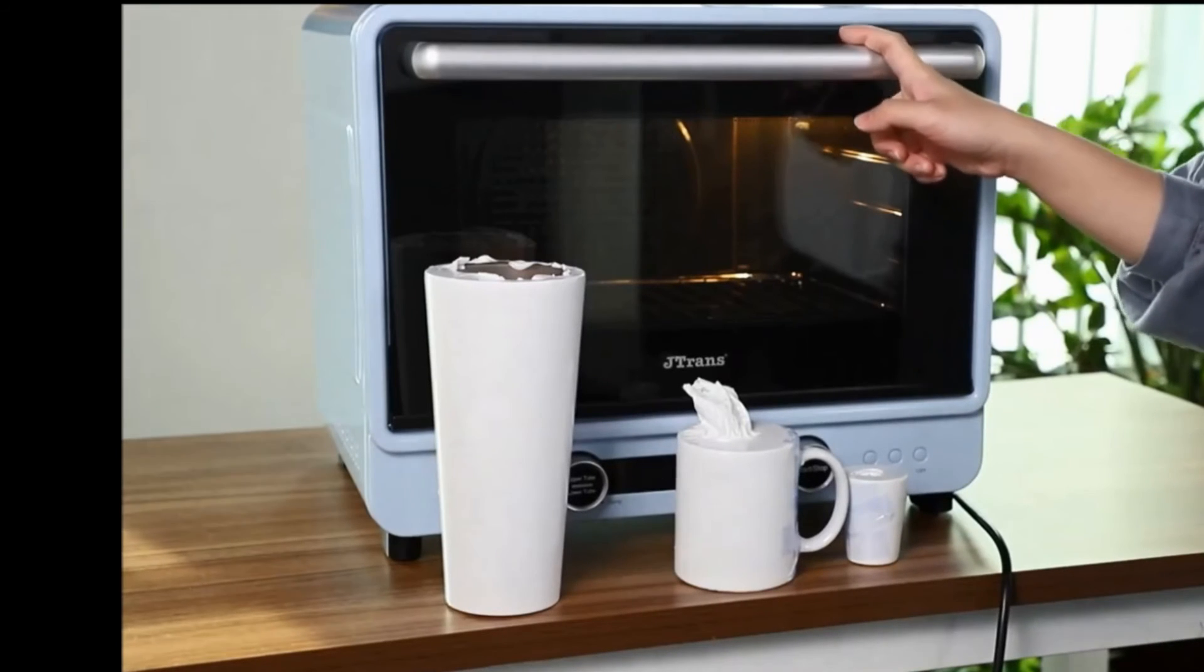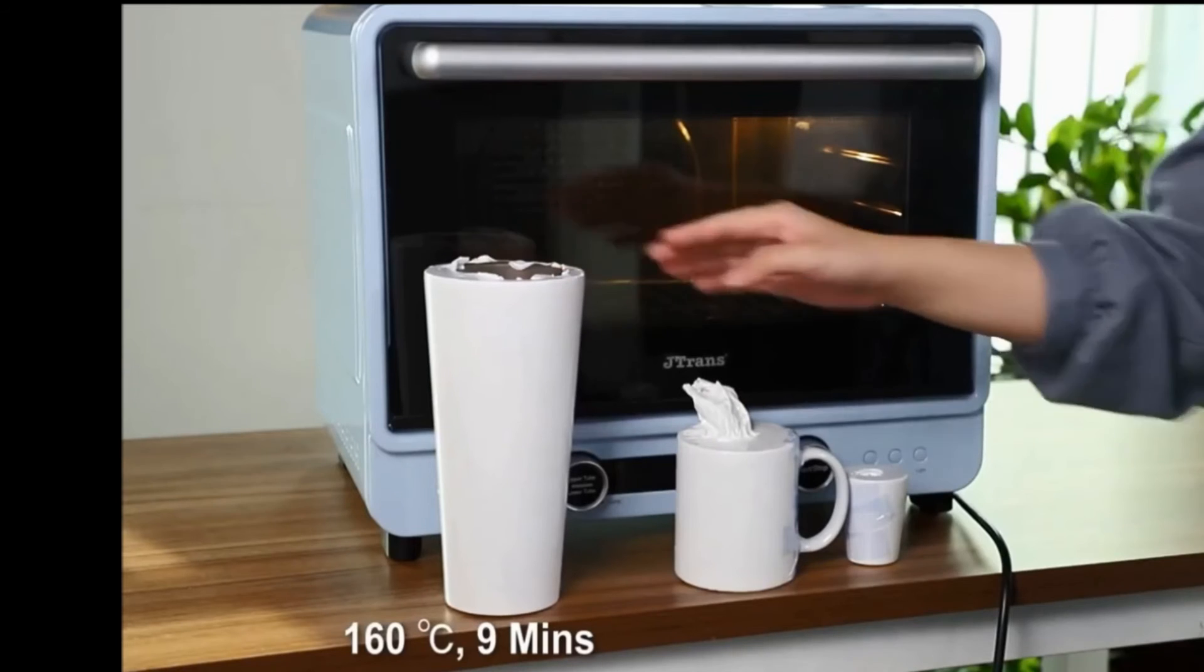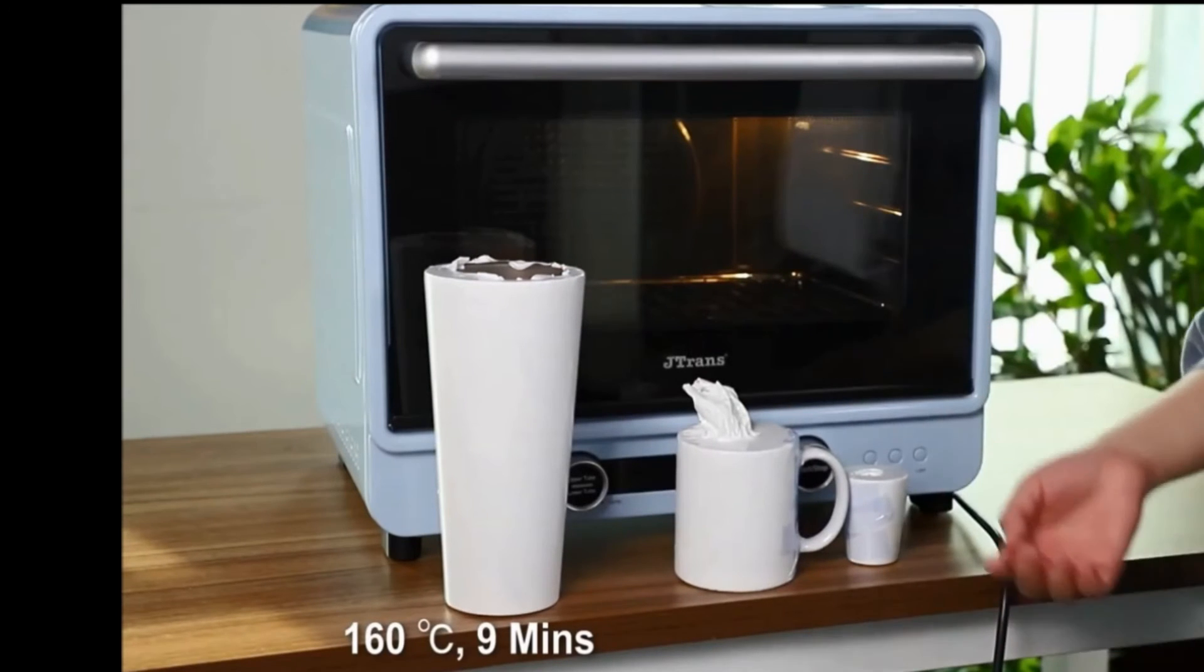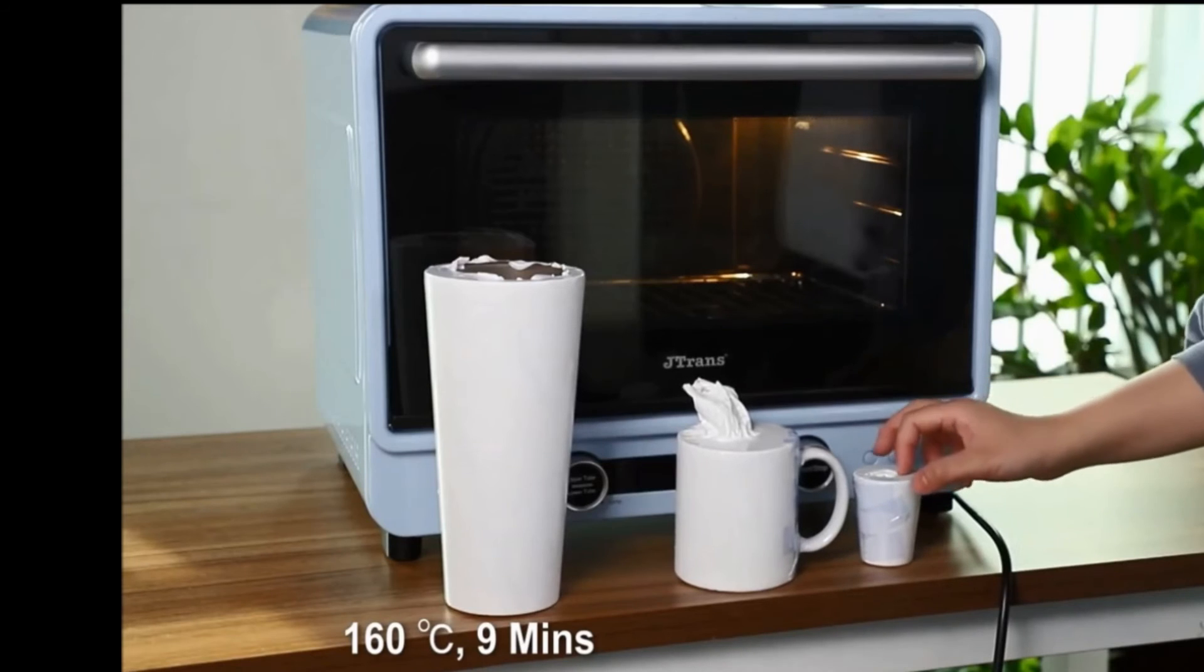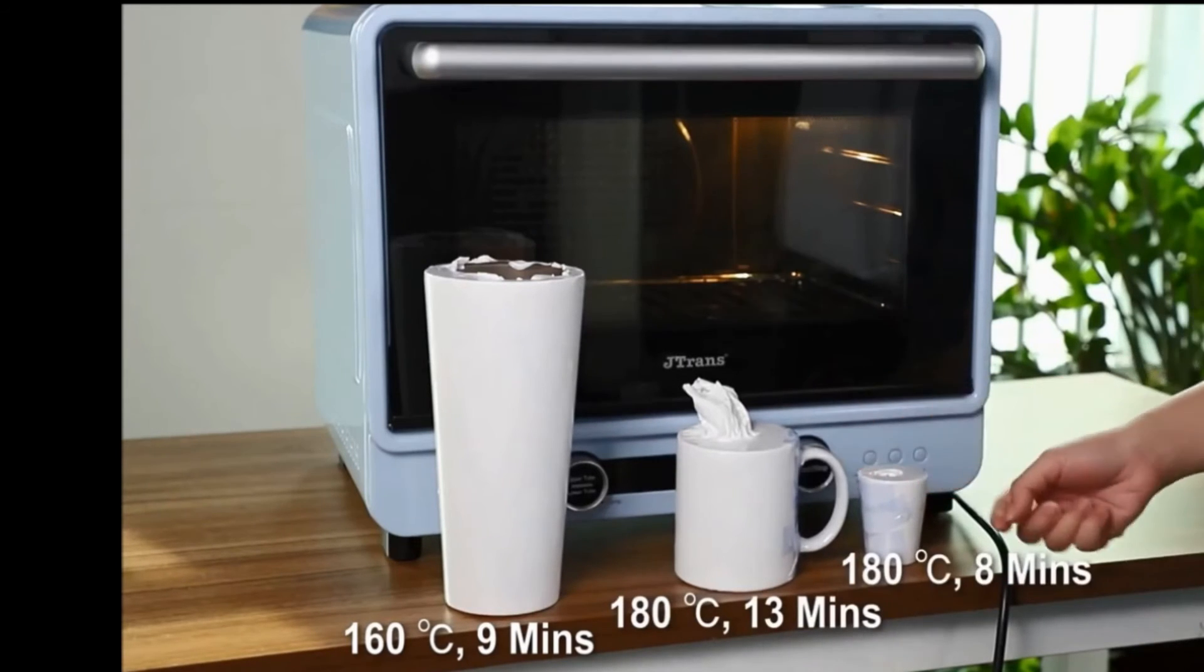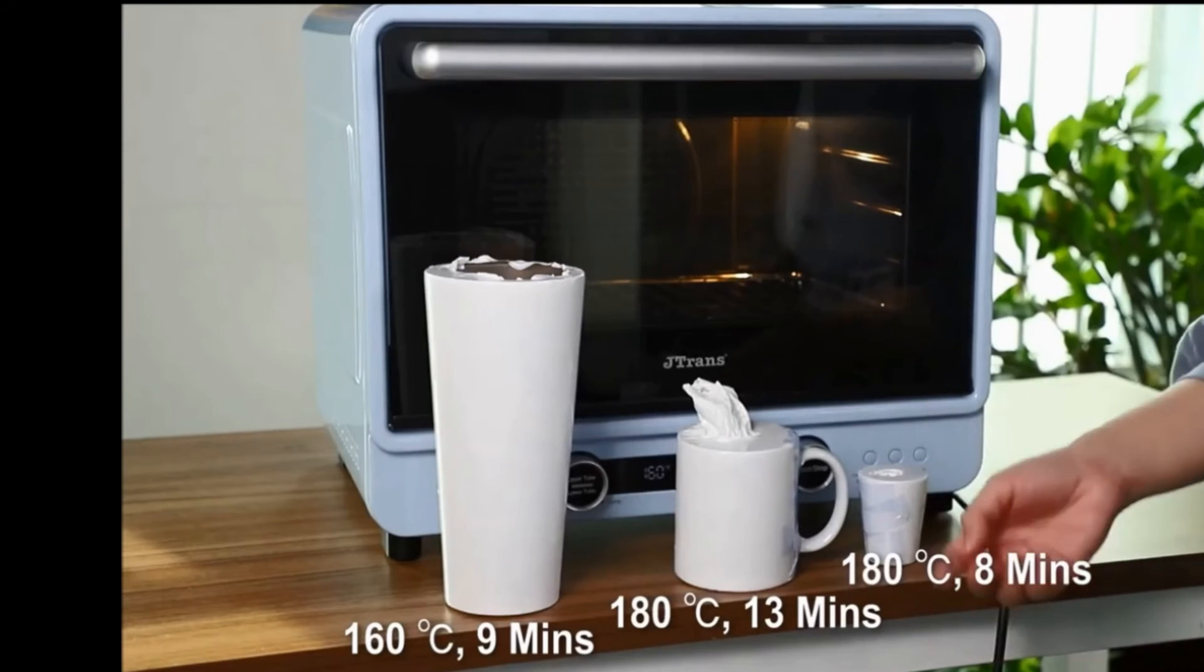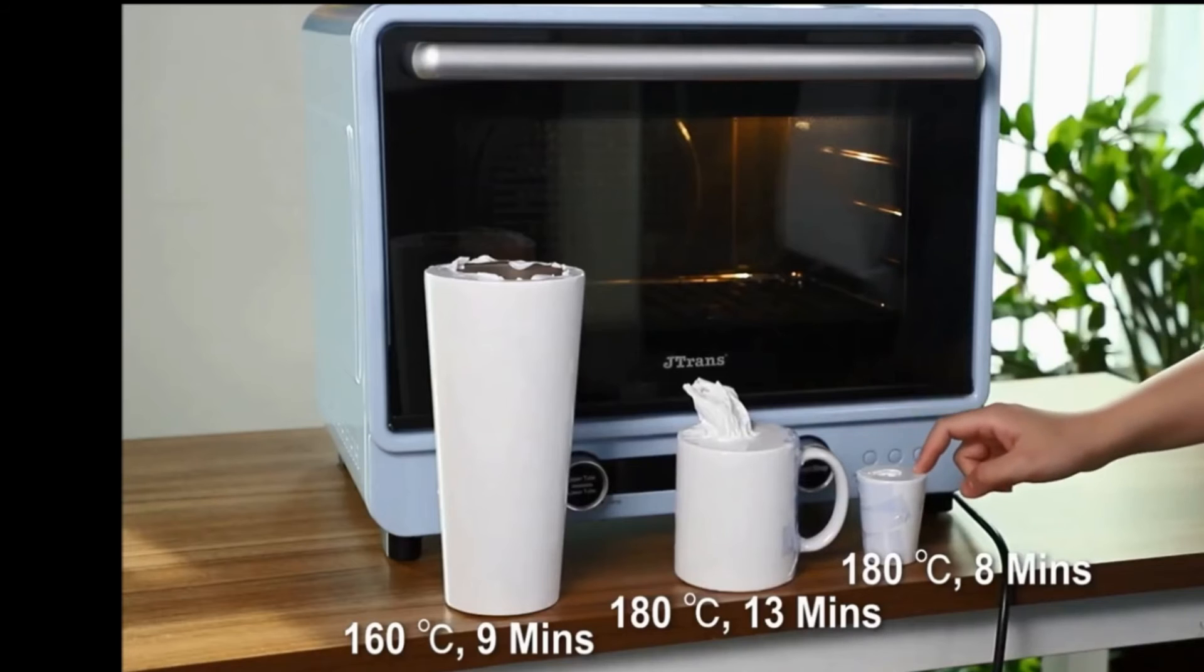The machine I use is our iSmart sublimation oven. For the large tumbler I will use 160 degrees Celsius and 9 minutes. And for the mug and the short glass, the temperature is 180 degrees Celsius, but the mug needs 30 minutes and the short glass needs 8 minutes. So see you after sublimation.